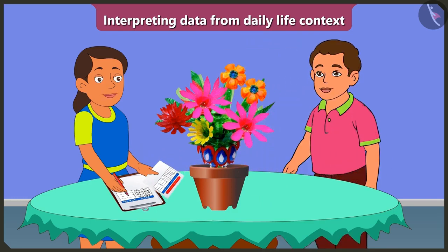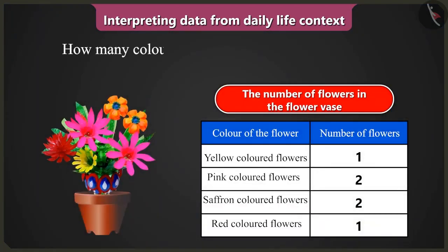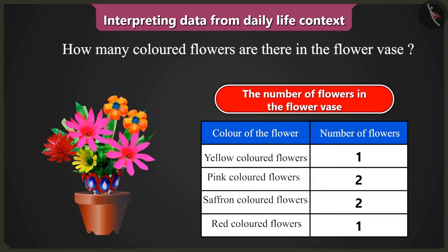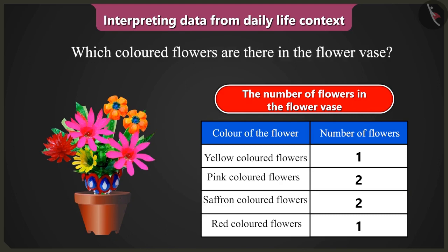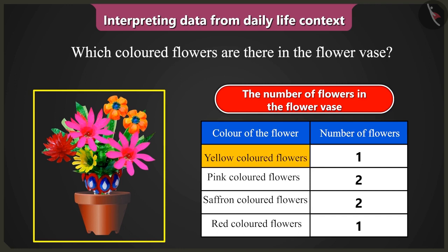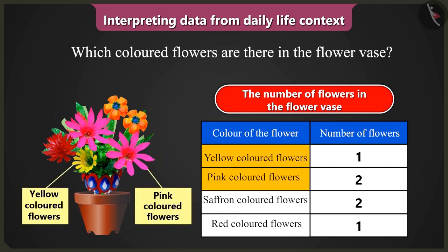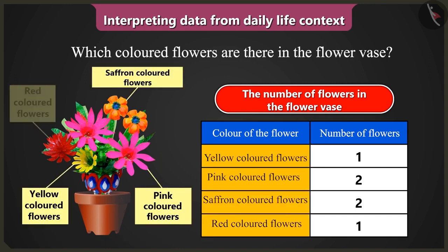Thank you, Bunty. I will interpret the data from this table. So tell me, how many colored flowers are there in the flowers? The table has data about flowers of four colors. Which colored flowers are there? There are yellow, pink, saffron and red colored flowers.